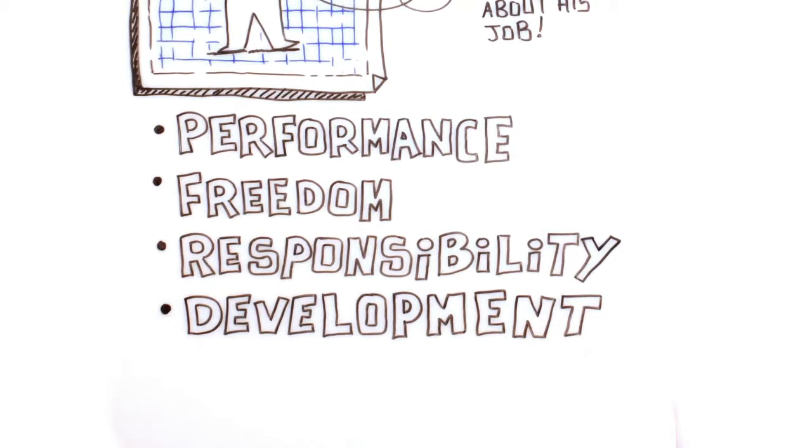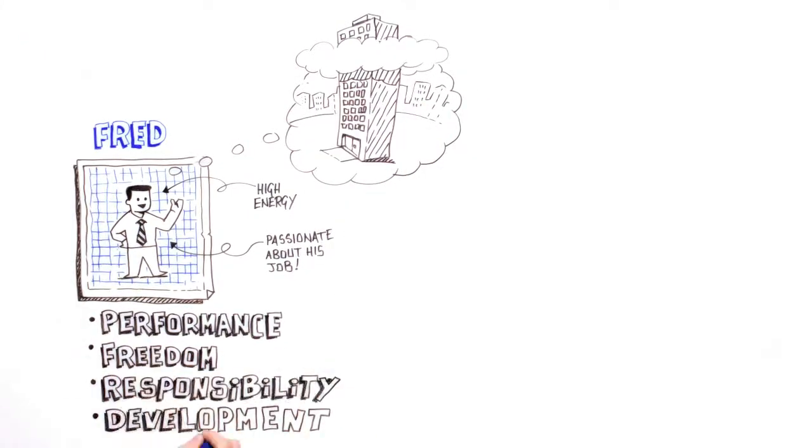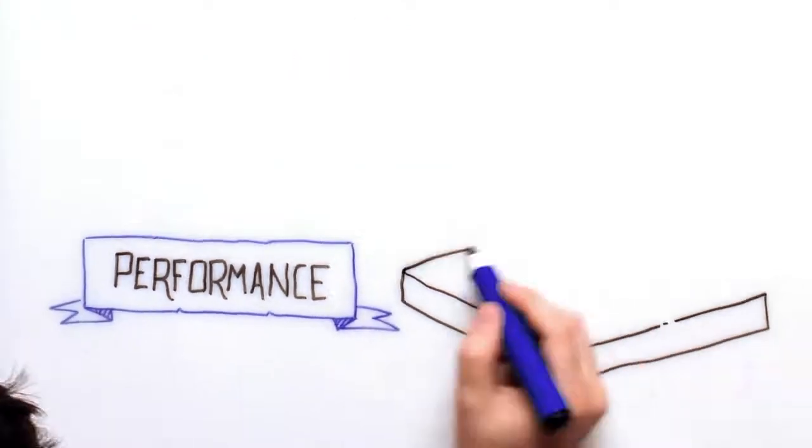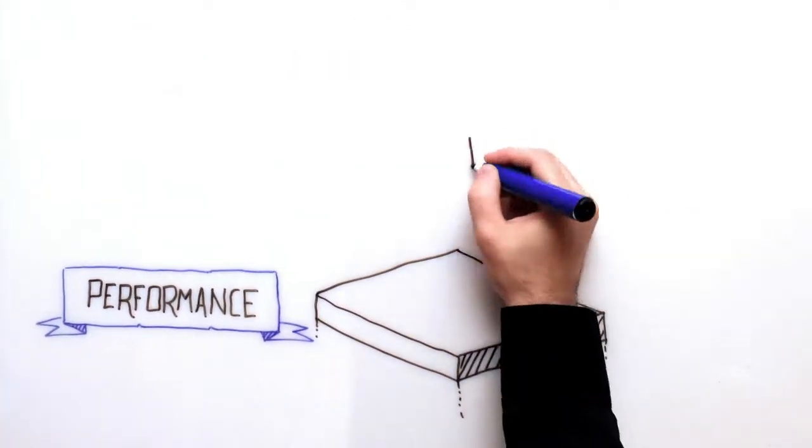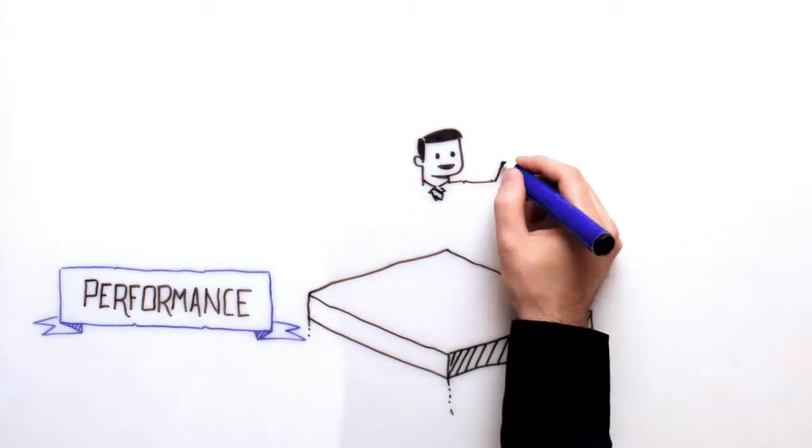Fred thinks of the Tiger's Way as a skyscraper. Performance is the foundation of the Tiger's Way. It's the base upon which everything else is built. Fred knows that we don't see performance and productivity as the amount of hours he spends behind his desk.